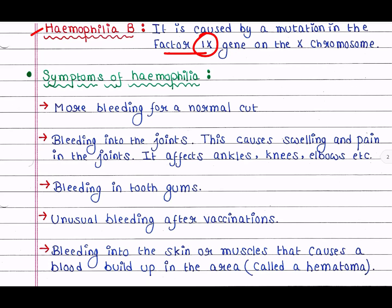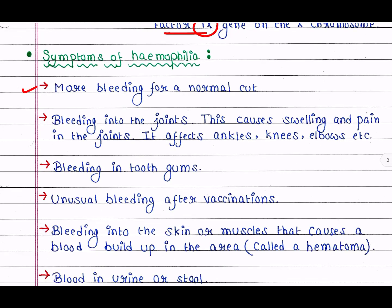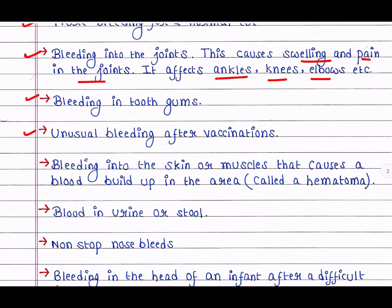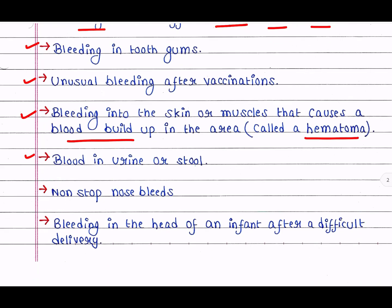Let's look at some symptoms of hemophilia: more bleeding than normal for a simple cut; bleeding that is non-stoppable; bleeding into the joints, causing swelling and pain — affecting ankles, knees, elbows, etc.; bleeding in the tooth gums; unusual bleeding after vaccination; bleeding into the skin or muscle causing a blood buildup in the area, which is called a hematoma; blood in urine or stool; non-stop nosebleeds; and bleeding in the head of an infant after a difficult delivery.